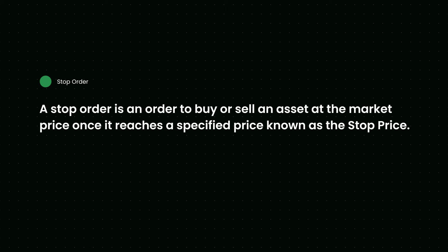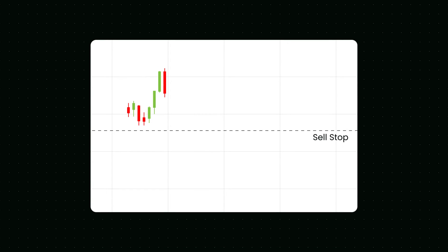A stop order is an order to buy or sell an asset at the market price once it reaches a specified price, known as the stop price. You would typically set a sell stop order below the current market price. An order triggers when the market price drops at or below the stop price. Once this happens, the stop order will be activated and become a market order, selling the asset at the market's current price.